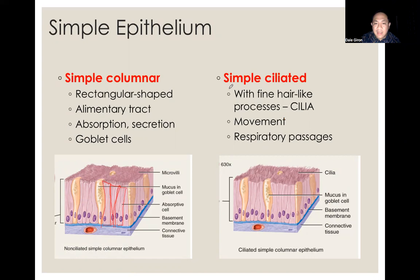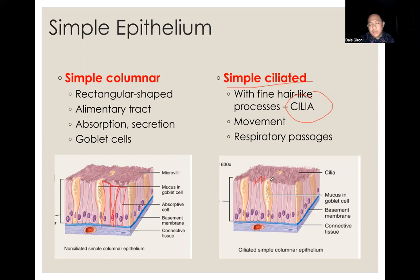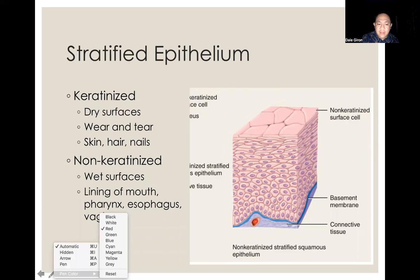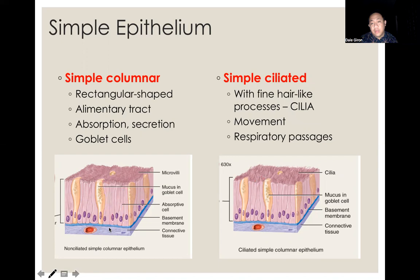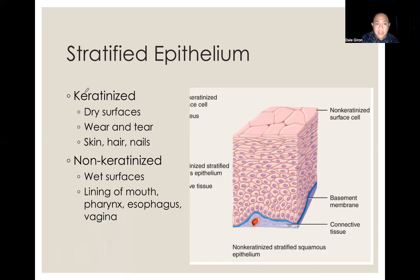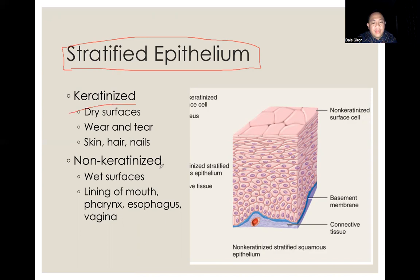Simple ciliated epithelium has white hair-like processes known as cilia. The main function of cilia is movement, and this type is usually found in the trachea and in the respiratory tract, to allow passage of air from outside to inside the lungs. Stratified epithelium has two or more layers, compared to simple which has only one layer. For stratified epithelium, you have to categorize first if it is keratinized or non-keratinized.